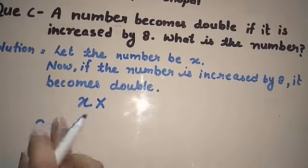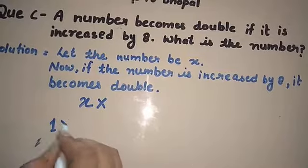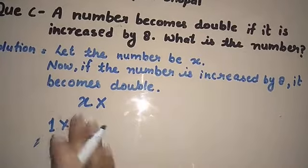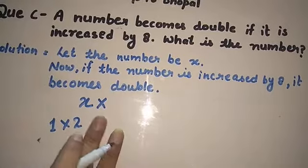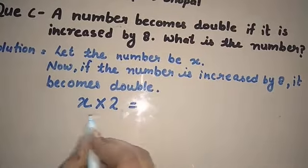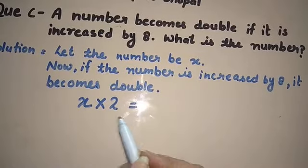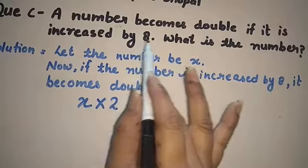A number becomes double. Double means X like suppose we are writing table. One ones are 1 and double mean 1 twos are. In this way, X twos are. X into 2, it means double means X twos are 2X. It is increased by 8.